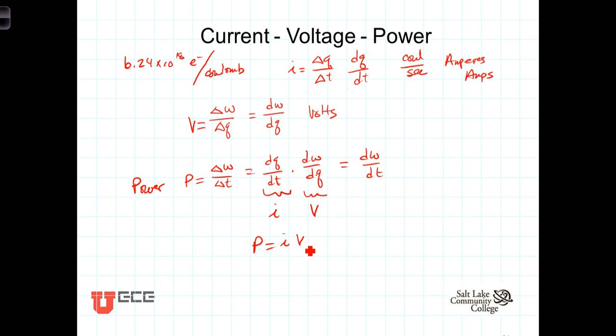So for example, if we've got a 9-volt battery, V equals 9 volts, and it delivers 1/3 of an amp, or I equals 1/3 of an amp, to a light bulb, the power of the light bulb would be P equals I times V, which would equal 1/3 times 9, or 3 watts.